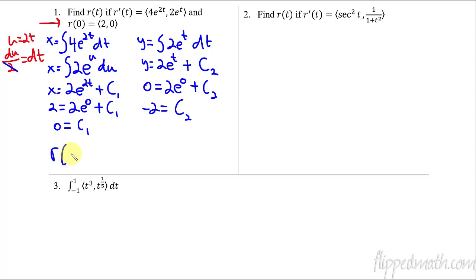And now you can see, I can write out that r of t is going to equal my vector function. So the x is here, 2e to the 2t plus my constant. 2e to the 2t plus my constant of 0. So I'm just not going to write that, it's just plus 0. So there's the first, the horizontal component. And then the other part of my vector-valued function would be the y component. 2e to the t plus the other constant, which was negative 2. So minus 2. And then I can close my bracket. And there is my vector-valued function.